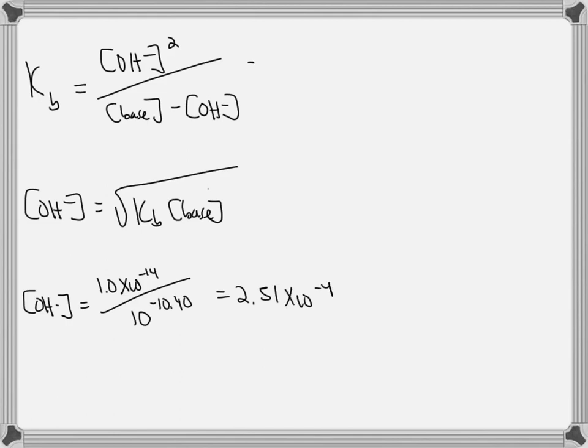So going back up here we've got 2.51 times 10 to the negative 4, which we will square. We will then divide that by the concentration of the base provided, 0.200 minus 2.5 times 10 to the minus 4.